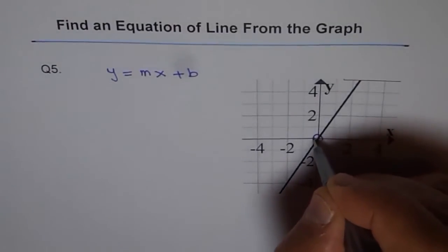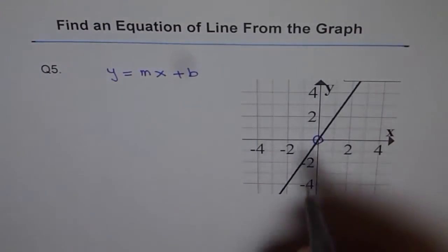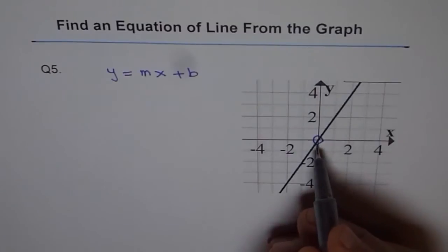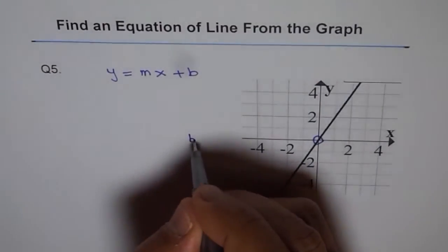The y intercept for this line is at origin, so we know b equals to 0.